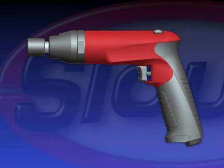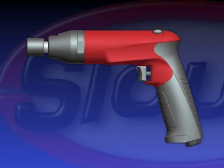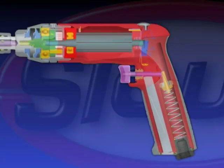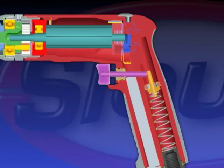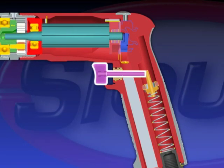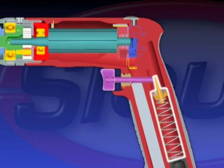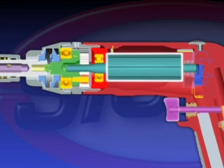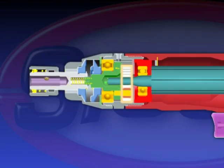The components of a screwdriver are similar to a drill in that they have the trigger and valve, motor, gearing, and spindle — except a clutch is inserted between the gearing and spindle.